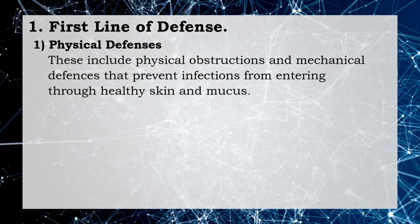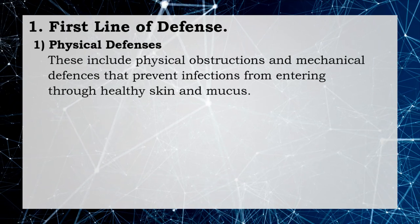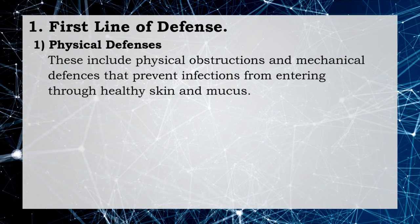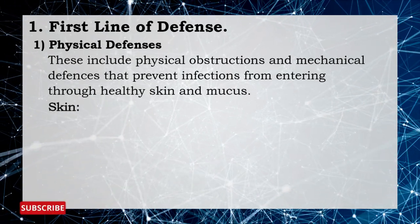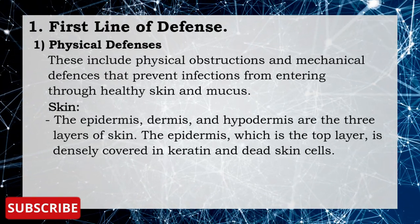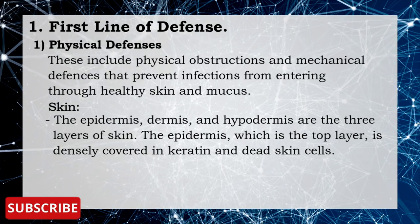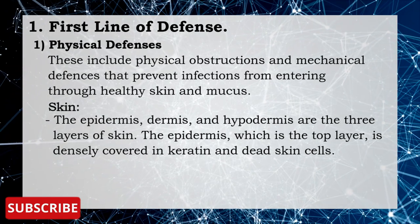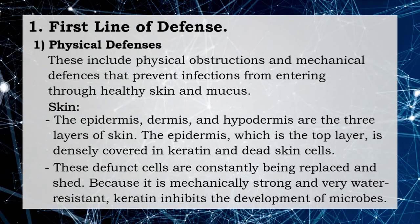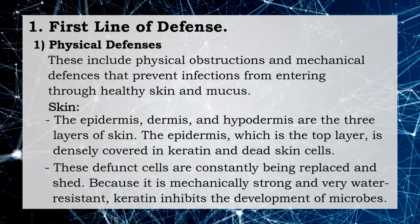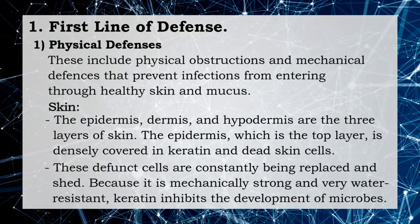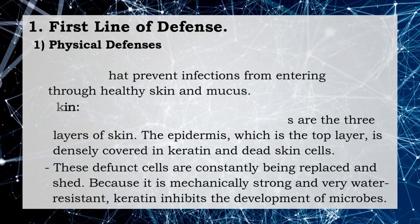Physical defenses include physical obstructions and mechanical defenses that prevent infections from entering. These include skin, which has three layers: the epidermis, dermis, and hypodermis. The epidermis, the top layer, is densely covered in keratin and dead skin cells. These dead cells are constantly being replaced and shed. Because it is mechanically strong and very water resistant, keratin inhibits the development of microorganisms.